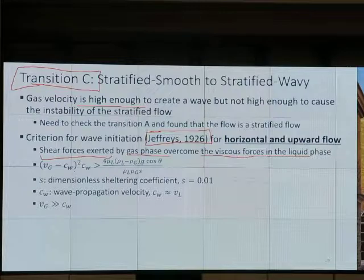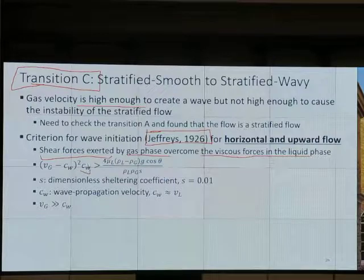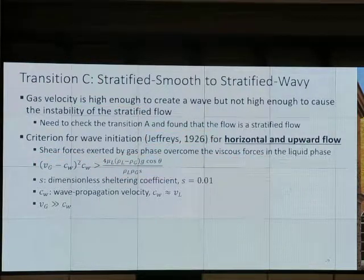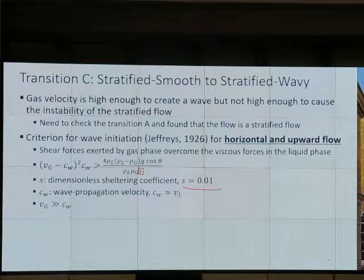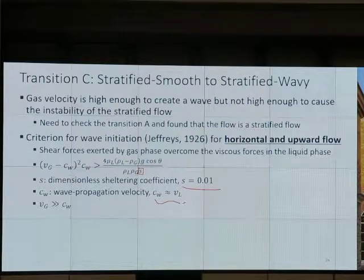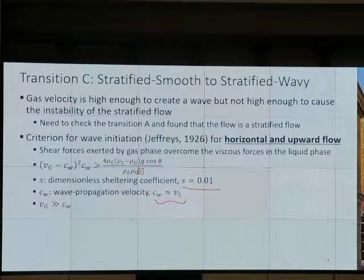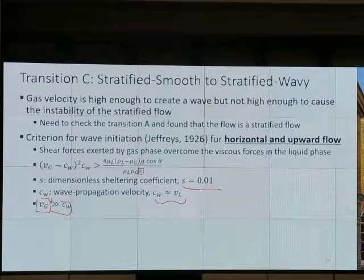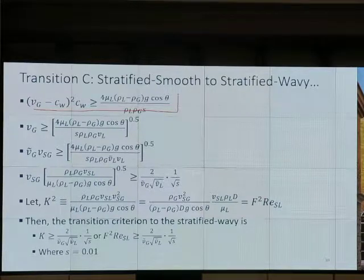The equation from Jeffreys is: (VG minus VW)² multiplied by VW greater than some value. The left side is shear force. Right side is the viscous force formula - ρG cosθ over ρL times ρG, times some parameters. New parameter s from Jeffreys paper is 0.01 - it's a dimensionless sheltering coefficient used in wave initiation calculation. cw is the wave propagation velocity. We can assume wave propagation velocity is about the velocity of liquid phase. Wave travels at the velocity of liquid phase. And we say VG is a lot faster than cw. Otherwise we don't have wave. Put it in, we get this form. Do the math.